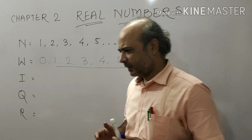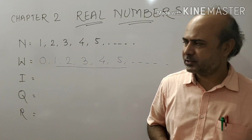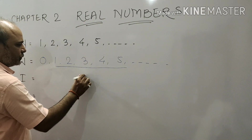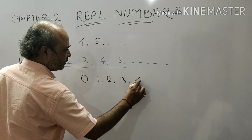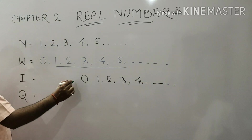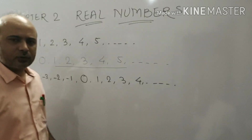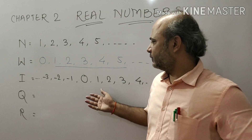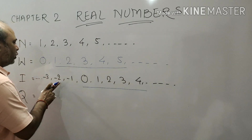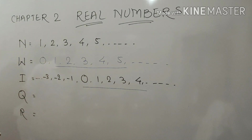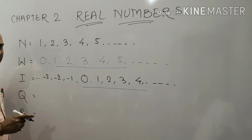Now, integers. Integers are of two types: positive integers and negative integers. So integers include 0, and on the right-hand side are positive integers: 1, 2, 3, 4 and so on. On the left-hand side you get negative integers: minus 1, minus 2, minus 3 and so on. So integers are whole numbers along with the negatives of natural numbers.